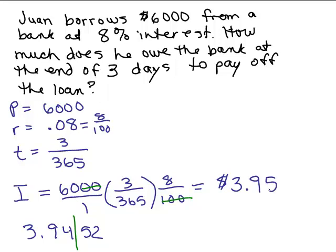So isn't that amazing, you can borrow $6,000 for 3 days and that's how much you pay in interest is $3.95. So then the question is, how much do you owe the bank at the end of 3 days? We'd have to add $3.95 to that $6,000. So you would have $6,003.95 is how much he owes the bank.